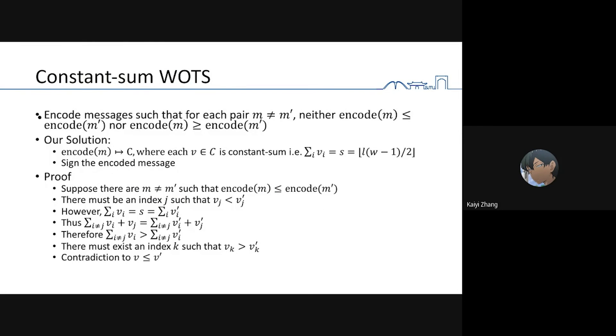We can have a better solution. This is our solution. We encode the message to a constant sum space. Constant sum means for each vector or codeword in the space, the sum of coordinates is a constant. It means the sum of w i is a fixed number. We can also prove that if two distinct messages have encoded messages that are comparable, there will be a contradiction. So they are not comparable.